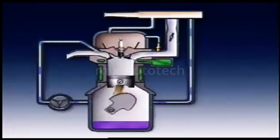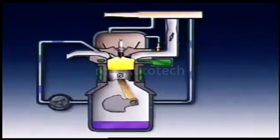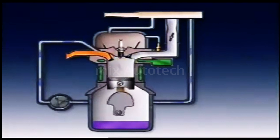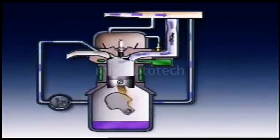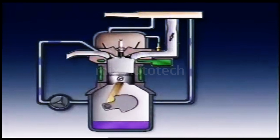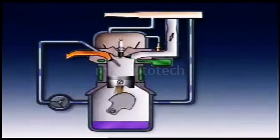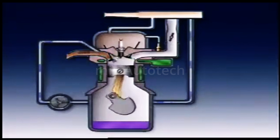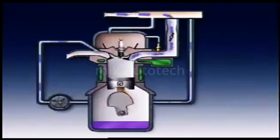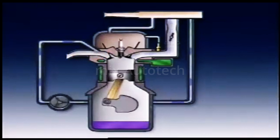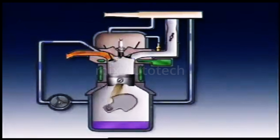If the exhaust gas is hot enough, combustion of remaining hydrocarbons and carbon monoxide can be completed by adding extra air to them at the exhaust port or manifold. This afterburning produces water and carbon dioxide, which are then exhausted to the atmosphere.